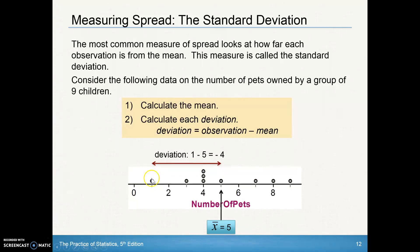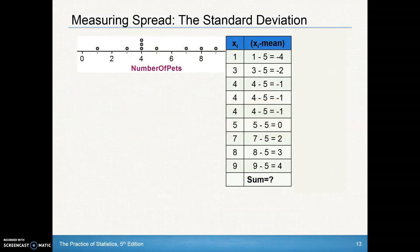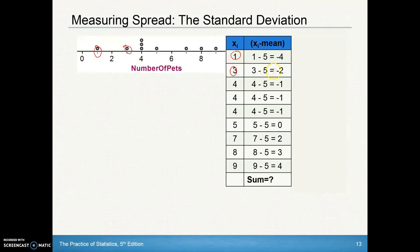Looking at the first score, we take that observation of one minus the mean. One minus five is negative four. So that's the first deviation — it deviates by negative four, meaning it's lower than the mean. For the score of eight, eight minus five is three. We do that with each and every one of the values. For the observation of three, we take three minus the mean to get that deviation. We get all of these deviations and then we're going to add them all up.